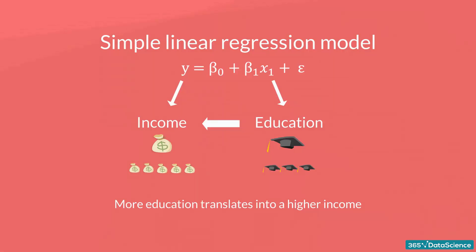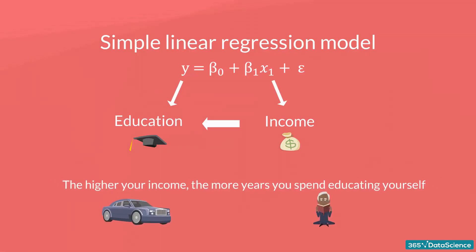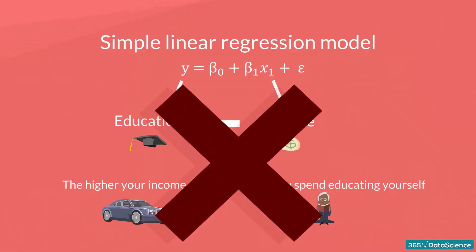Now, let's pause for a second and think about the reverse relationship. What if education depends on income? This would mean the higher your income, the more years you spend educating yourself. Putting high tuition fees aside, wealthier individuals don't spend more years in school, and high school and college take the same number of years, no matter your tax bracket.